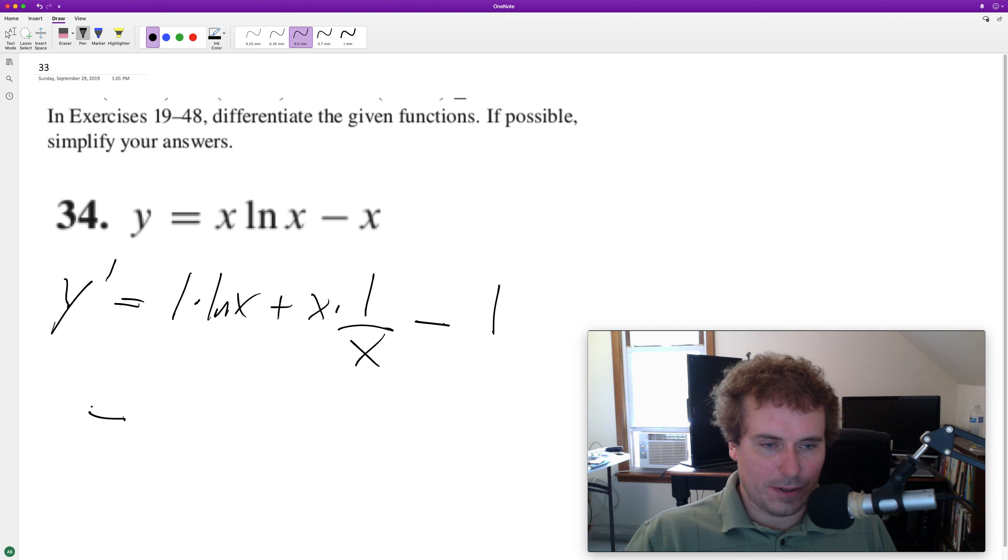This is pretty interesting. We just get natural log of x because one times that, and then the x's cancel out here and we get one, and we have minus one. So those cancel out and we're just left with y prime equals natural log of x.